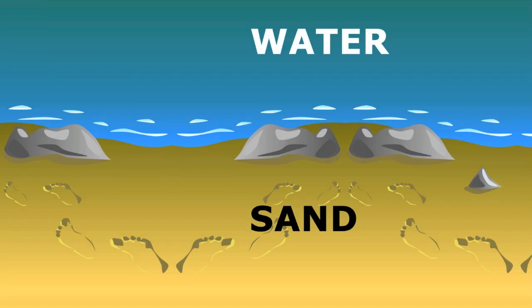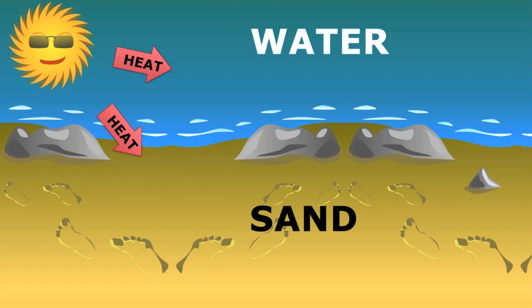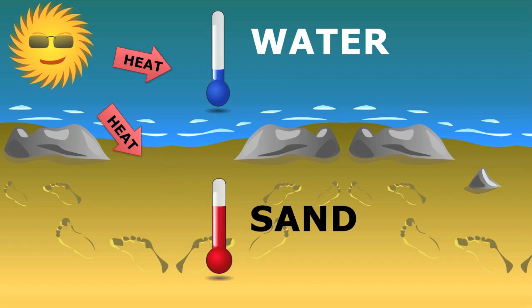If you've ever been to the beach, you know that the sun can really heat things up — so much so that the sand can get too hot to walk on. But you can always cool your feet off in the nice cold water. This gets one thinking: why is the water so much colder than the sand when they are both getting heated by the sun equally? The answer has to do with heat capacity.